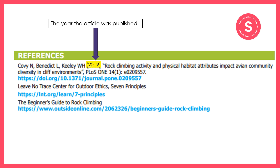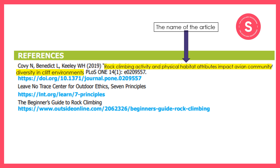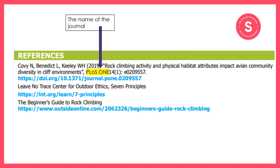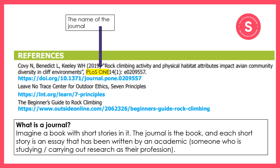The year in brackets refers to the year the article was published. Next we've got the name of the article: 'Rock Climbing Activity and Physical Habitat Attributes Impact Avian Community Diversity in Cliff Environments.' After that is the name of the journal. To understand what a journal is, imagine a book with short stories in it — the journal is the book, and each short story is an essay written by an academic. An academic is someone who studies or carries out research as their profession, and the essay can also be called a paper or an article.